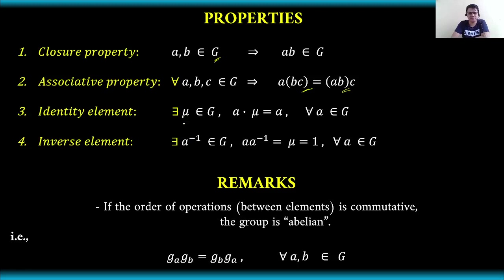We also have the identity element: there exists an element μ of G such that A times the identity element equals A. This is because the identity element has magnitude one — it is a special operator. In matrix form it is like a diagonal matrix with diagonal elements equal to one. This holds for all elements A in the group.